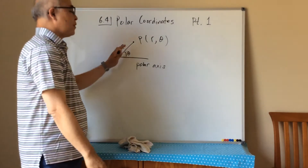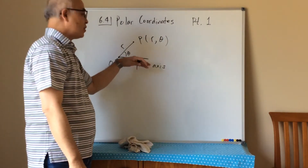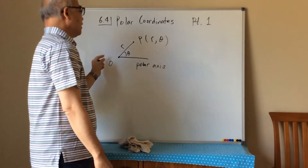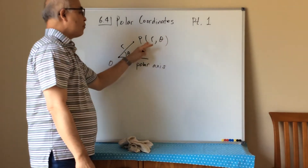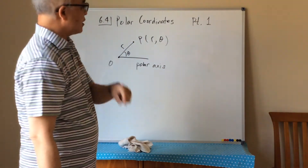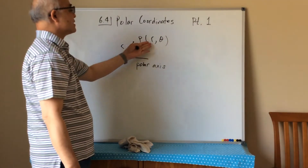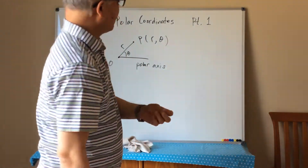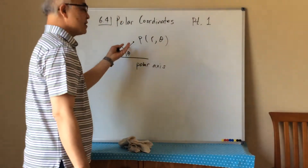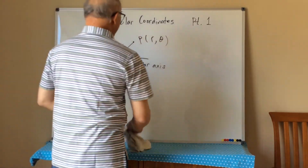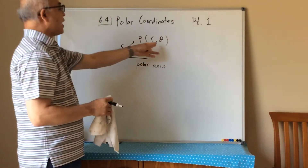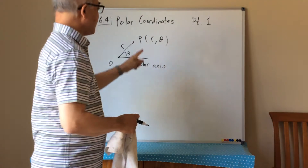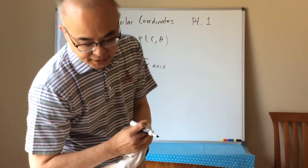The angle being directed is something you're used to — we start and go around just like before. But now we have a directed distance, meaning the distance can actually be negative in this coordinate system. The way to work this is: you work the angle first, then the distance second.